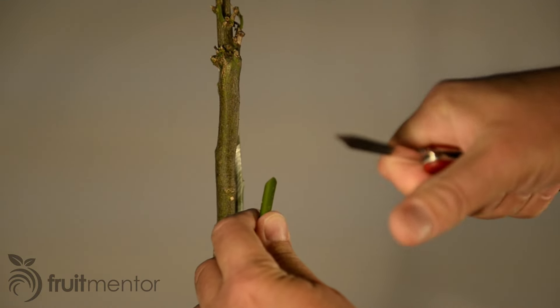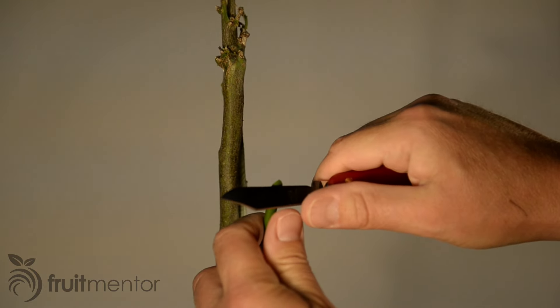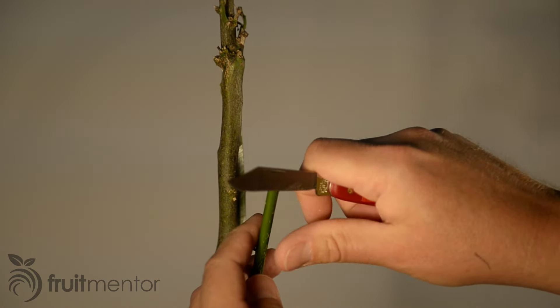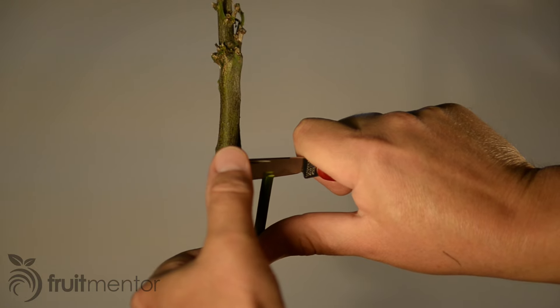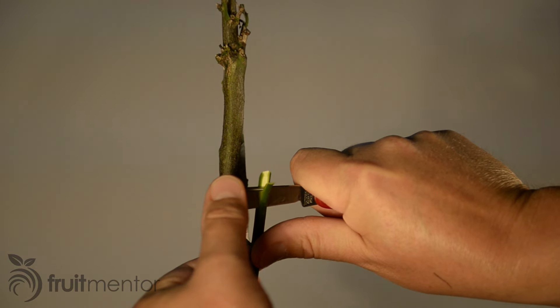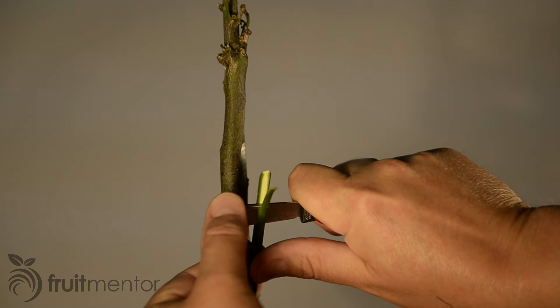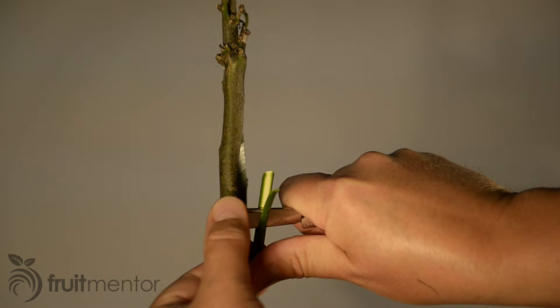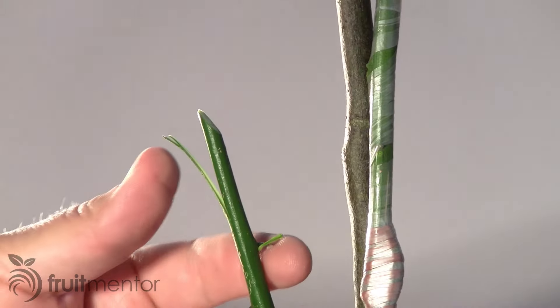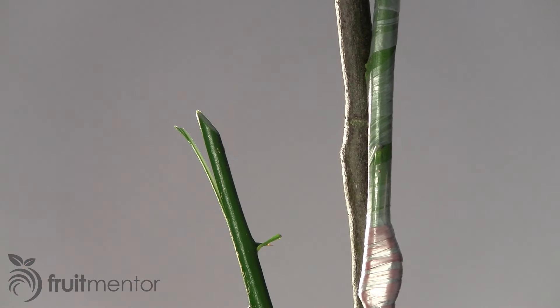The reason I find the Z-graft especially useful for grafting citrus is that I order my budwood from the CCPP, a tested disease-free source. Sometimes the scions that I receive are larger in diameter than the branch to which I would like to graft. In this case, the Z-graft is a good choice.